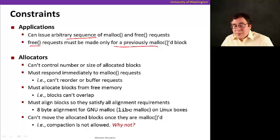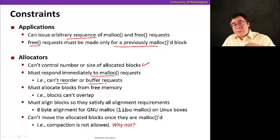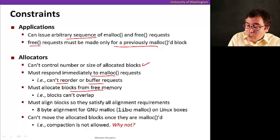And from the allocator point of view, the first thing that's important to know is that they really can't control the number or size of allocated blocks. This is something that the application does. The application does the requests, and the allocator just serves those requests. So it doesn't really know what the application is going to need in the future. And we wanted to be able to respond immediately to malloc requests. So in other words, it cannot reorder or buffer requests, so it's a synchronous call. When you call malloc, when it returns, it has to have done the job. It can't just reorder them. It has to respond immediately, otherwise it creates a big problem.